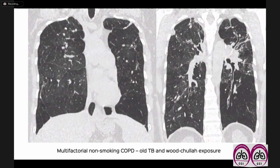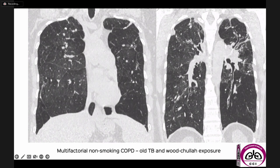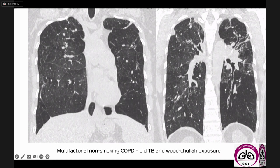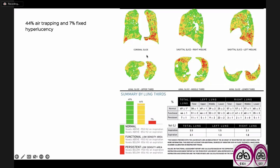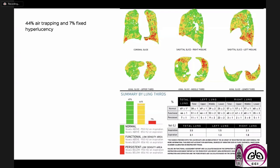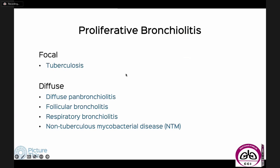In practice you may see multifactorial involvement. This patient has post-TB changes in the upper lobes plus woodfuel exposure, with lower lobe overinflation and air trapping on expiratory images — multifactorial non-smoking COPD, not uncommon in women and in our country. We've quantified seven percent fixed hyperlucency and 44 percent air trapping. The prognostic implications are not yet certain, but we are tracking these patients on follow-up to see if this correlates with improvement.